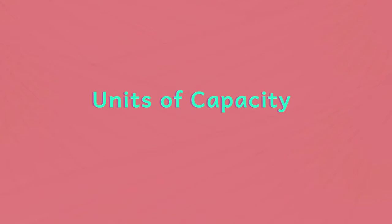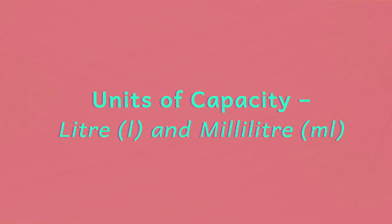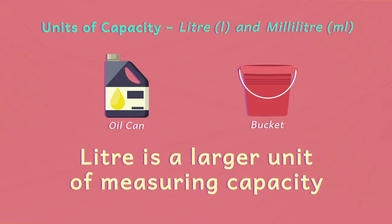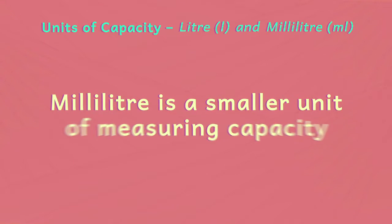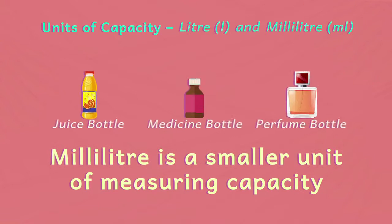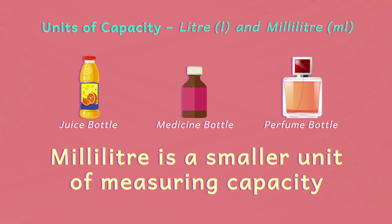The standard units to measure capacity are litre (L) and millilitre (ml). Litre is a larger unit of measuring capacity and is used to measure the capacity of large containers such as oil cans and buckets. Millilitre is used for smaller quantities like a small pack of juice, medicine or perfume bottle.